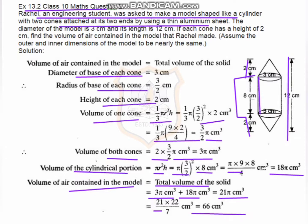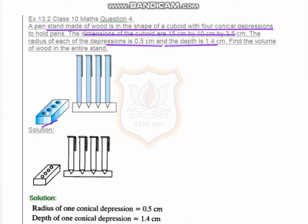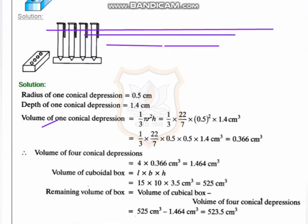Next question: A stand is made up of wood in the shape of a cuboid having 4 conical depressions to hold items. The dimensions of the cuboid are 15 × 10 × 3.5 centimeters. The radius of each conical depression is 0.5 centimeters and the depth equals 1.4 centimeters.